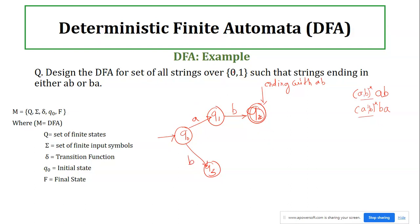Our alphabet is 'a' and 'b', not 0 and 1. If the string gets 'b' from q0, we move to q3. At q3, if we get 'a', we move to q4, which is the final state responsible for strings ending with 'ba'.